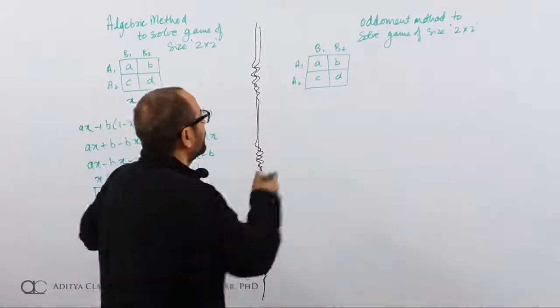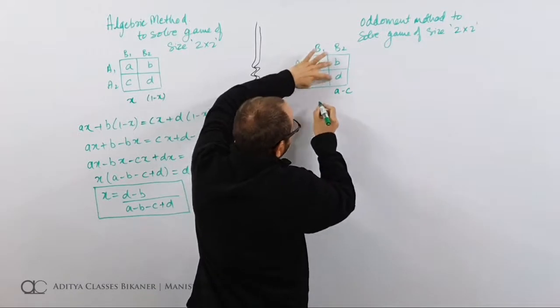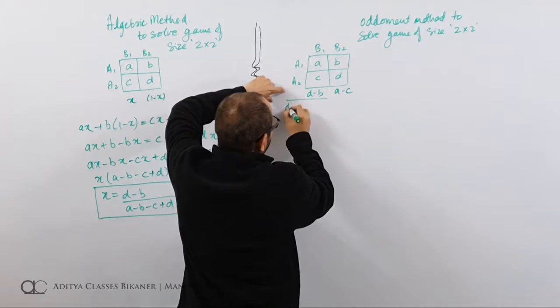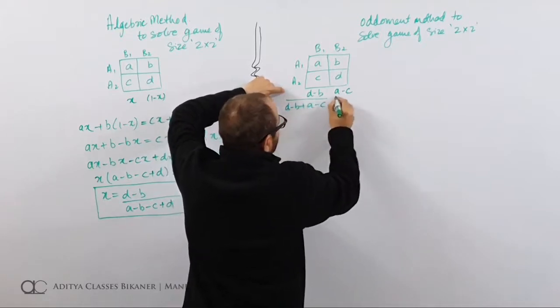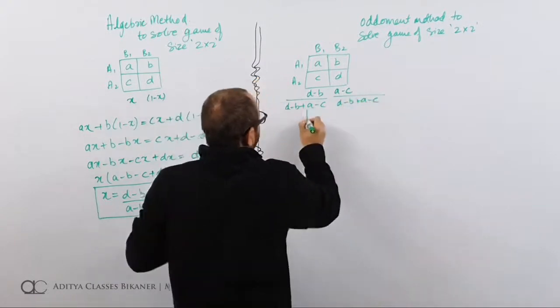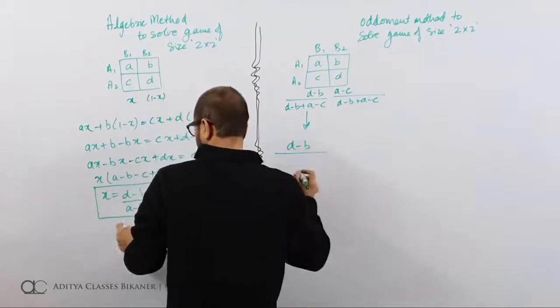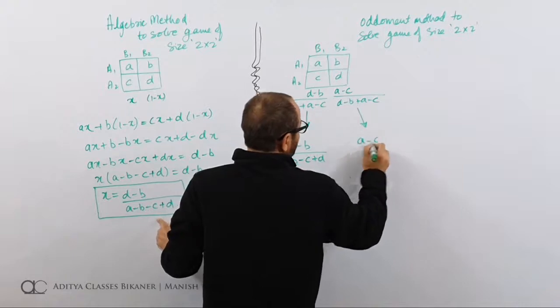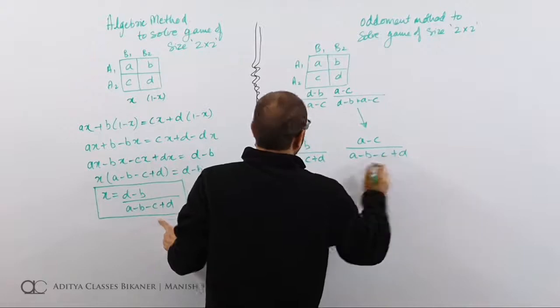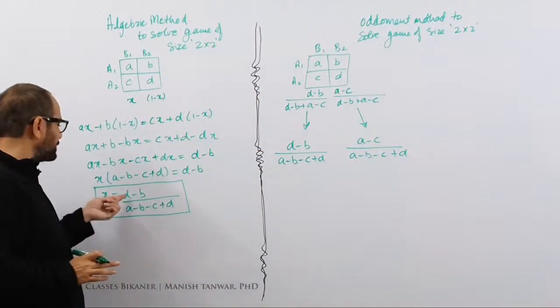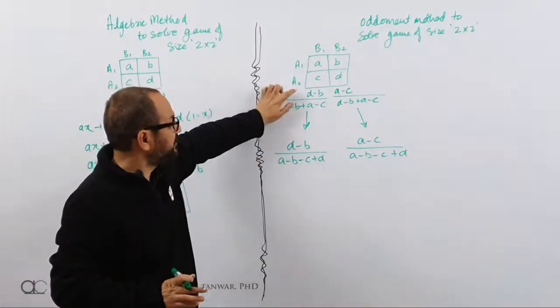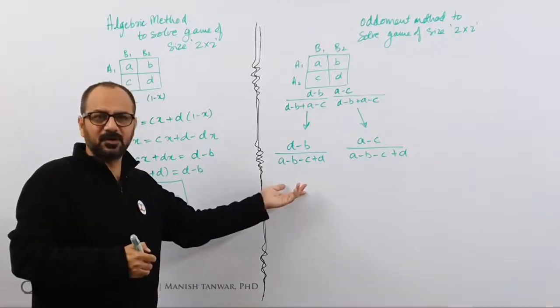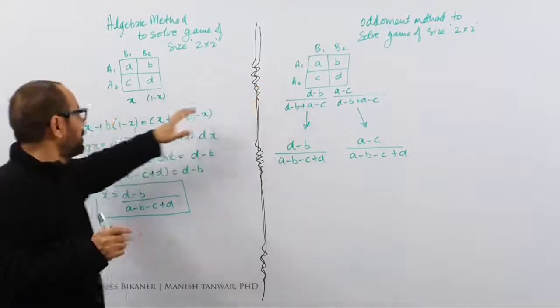While in oddment method, what we were doing? A minus C coming here, difference of D and B coming here. So these are the differences and how do we find out odds? D minus B upon sum of these. So it will become (D minus B) upon (D minus B plus A minus C). And this one will become (A minus C) upon (D minus B plus A minus C). If we have a look at this, this becomes (D minus B) upon (A minus B minus C plus D). And this one becomes (A minus C) upon (A minus B minus C plus D). So if we look at them, value of X is (D minus B) upon (A minus B minus C plus D). Exactly same as we were getting over here. This time I was calling it X, this time I am calling it odds. So yes, numerically these have to be same because we are trying to solve the same problem. So numerically they might be same but conceptually both are different.